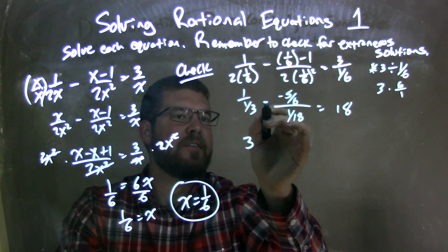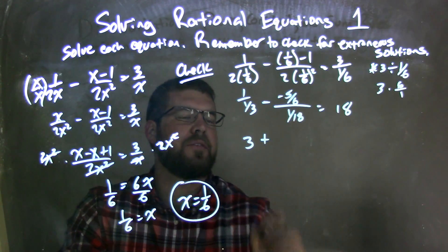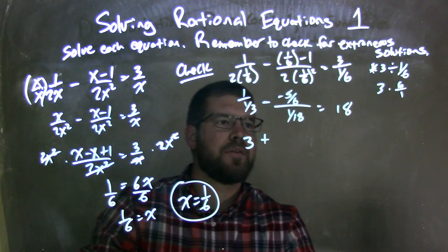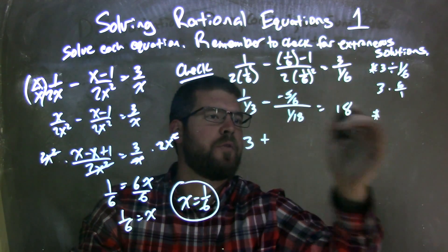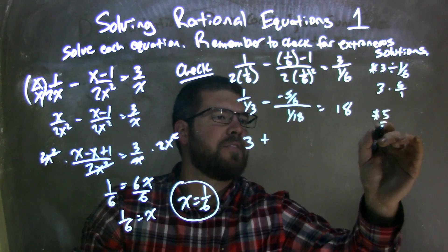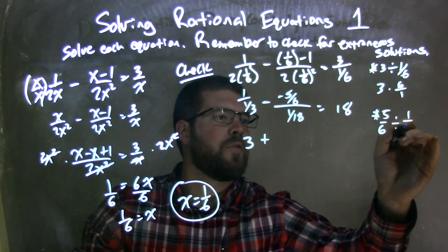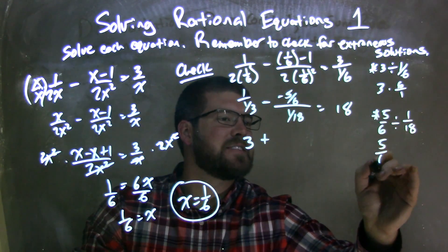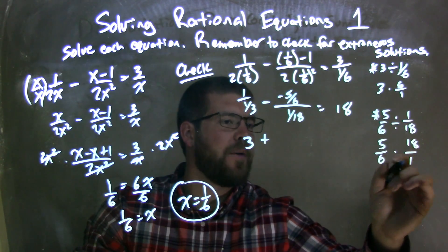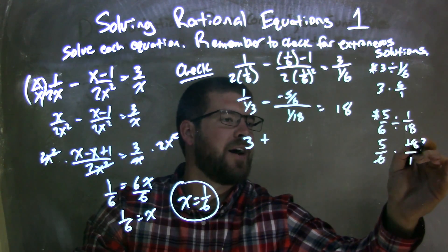And then our subtraction signs kind of eliminate to make a positive sign. We have minusing a negative, positive. So now what I'm going to do with that 5 sixths: 5 sixths divided by 1 over 18 is the same thing as 5 sixths times 18 over 1. 6 goes into 18 three times. Fantastic. So we have 15 here.